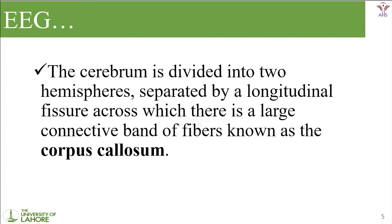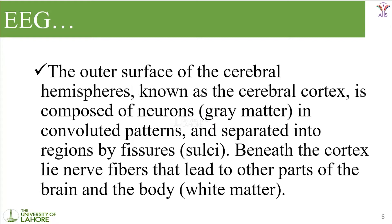The cerebrum is divided into two hemispheres separated by longitudinal fissures, across which there is a large connective band of fibers known as the corpus callosum. Those people who are right-handed have their whole work controlled by the left hemisphere, and those who are left-handed have their work controlled by the right hemisphere. The cortical surface of the cerebral hemispheres, known as the cerebral cortex, is composed of neurons — the basic component of signal transduction — also known as gray matter, arranged in convoluted patterns and separated into regions by fissures known as sulci.